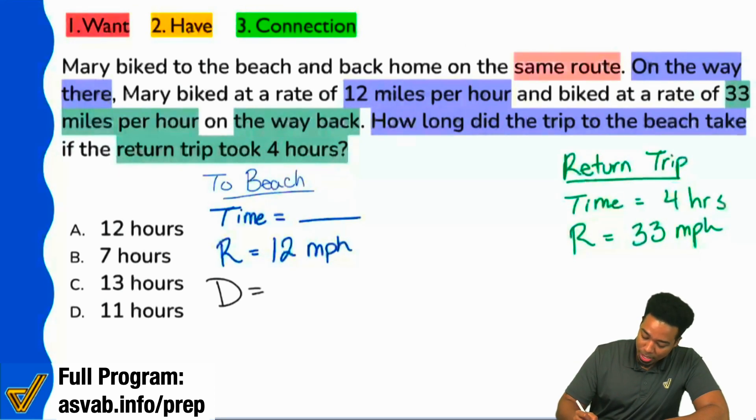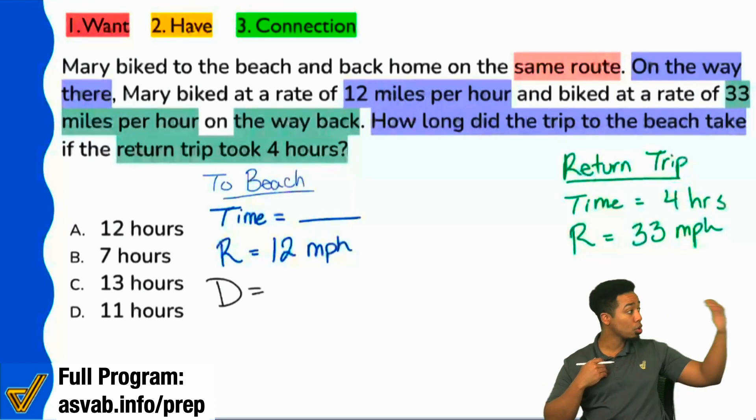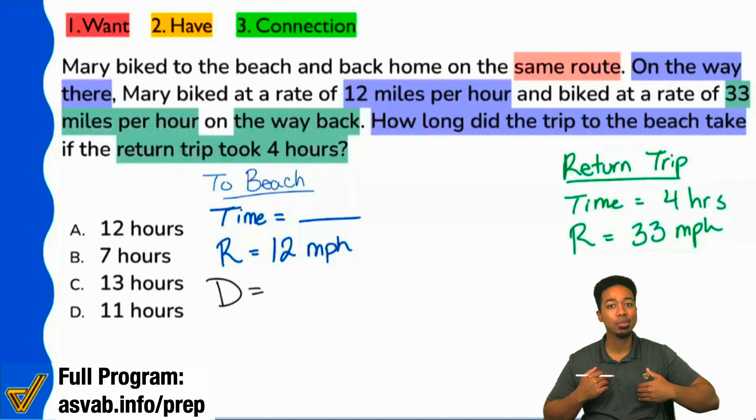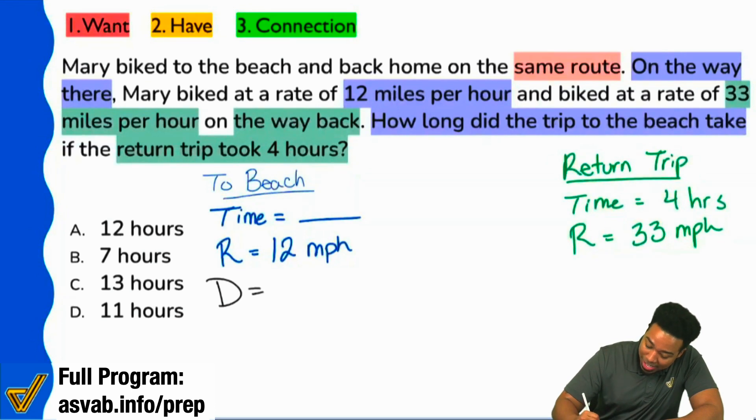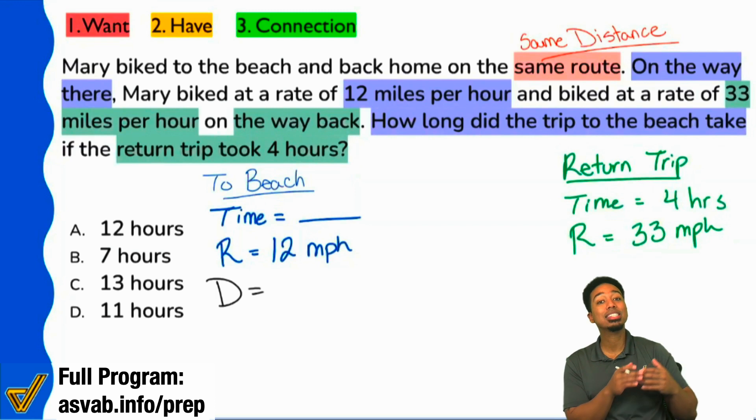Everyone, if we're talking about the same route, if I'm going from here to the grocery store and that's two miles and then I go from the grocery store straight back home the same way I came, that's two miles. So, what that means is that if we're taking the same route, same route means same distance. That's what that means. The same route means the same distance.